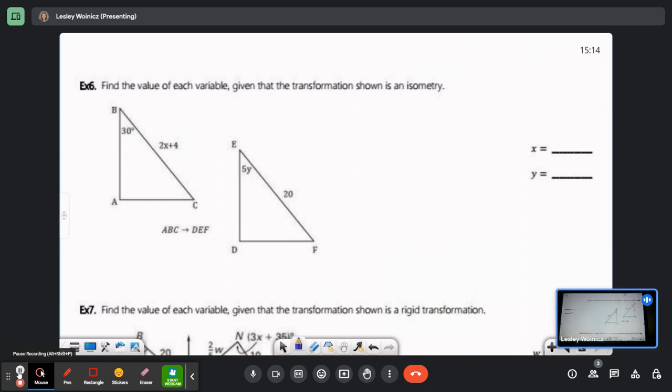Find the value of each variable given that the transformation shown is an isometry. What do we know about all of the angles, the corresponding angles in an isometry? They're rigid. Do they change or stay the same? Okay. So corresponding angles are congruent. What do we know about sides? Corresponding sides are, do they change or not change? In an isometry? No. Not change. Corresponding sides are also congruent. So we just have to figure out which ones match up and then set them equal to each other.